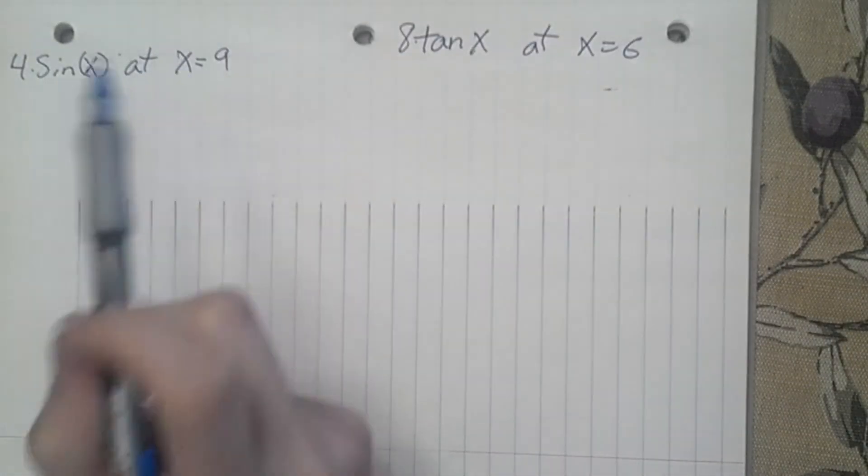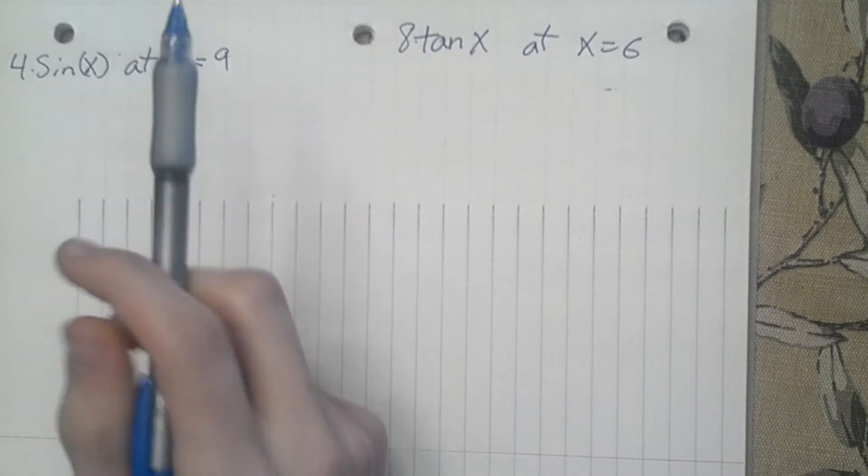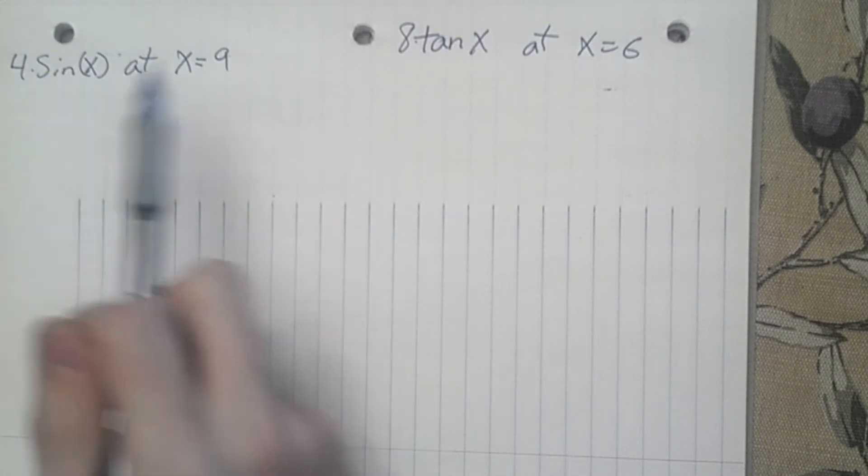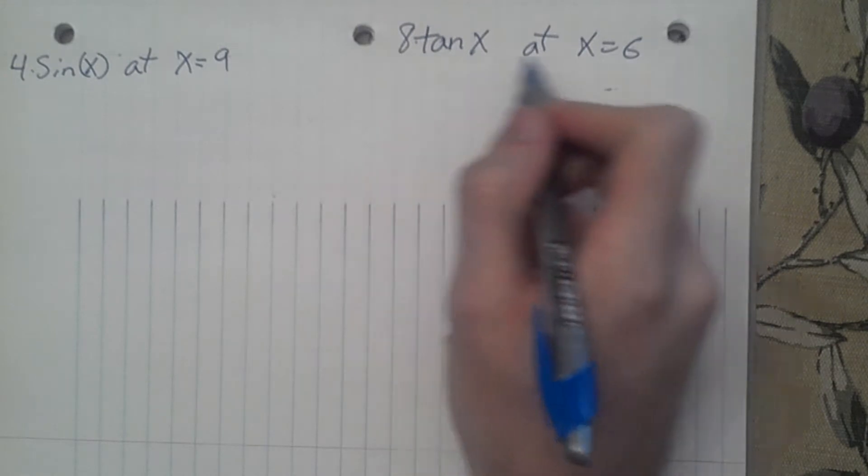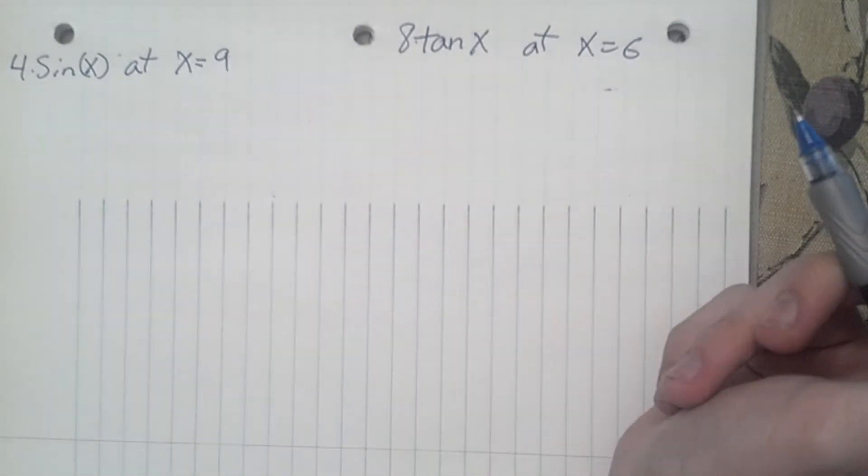We need to look at finding the equation of a tangent line at 4 sine x at x equals 9, and also at 8 times tangent x at x equals 6.